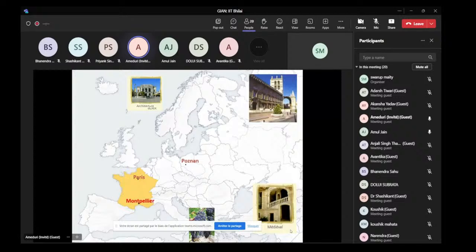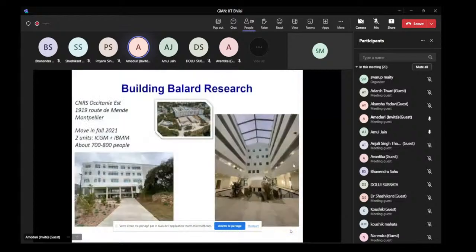Professor Vanagy enjoyed his time in this city. We are now moved to a new building, and this move was in fall 2021. We are located on CNRS campus, which is the National Research Center. We are about 700 people in this building, as you can see, with two institutes.